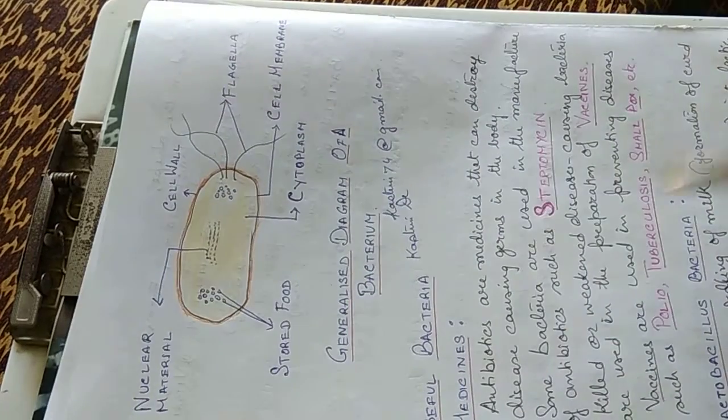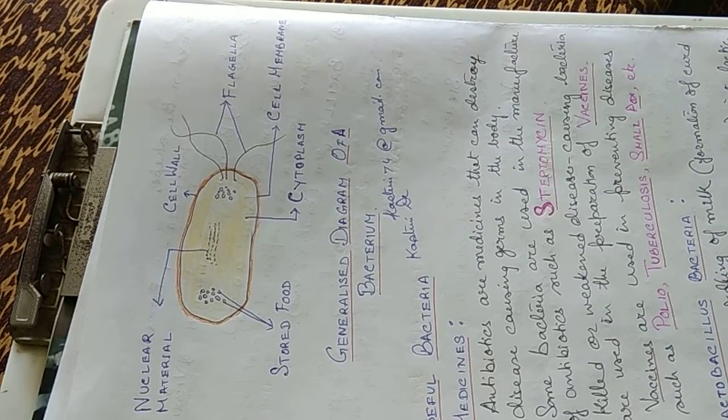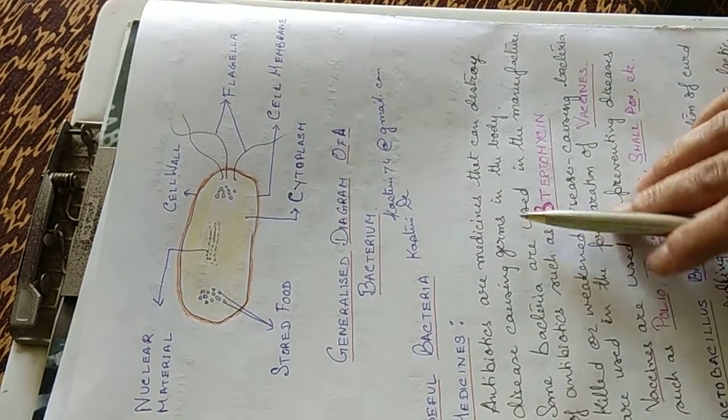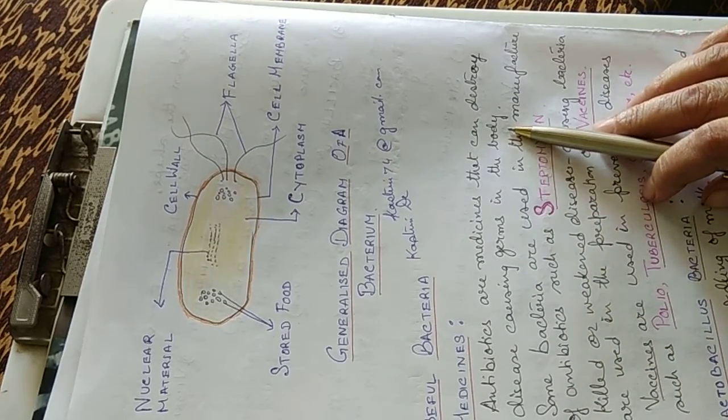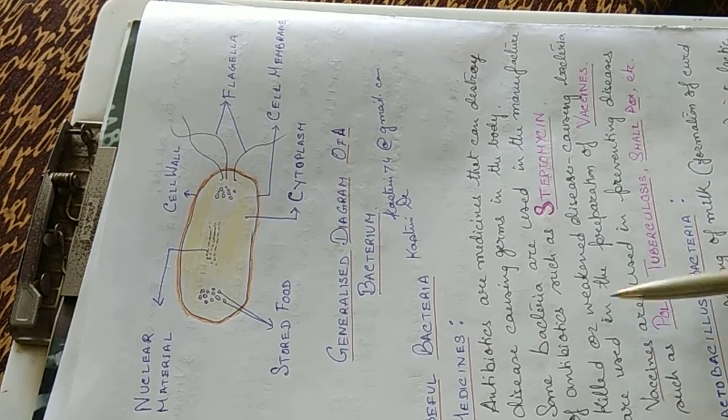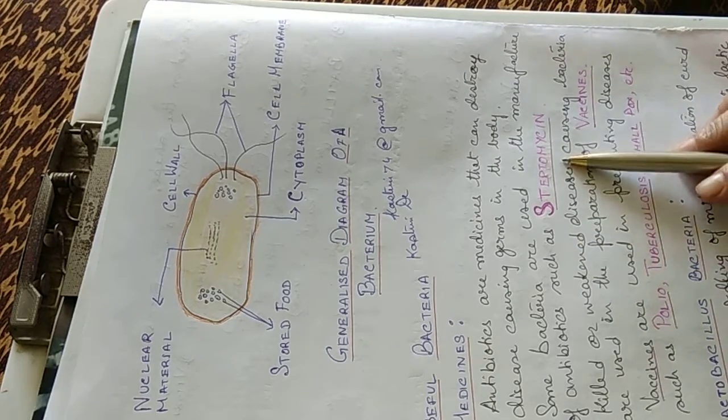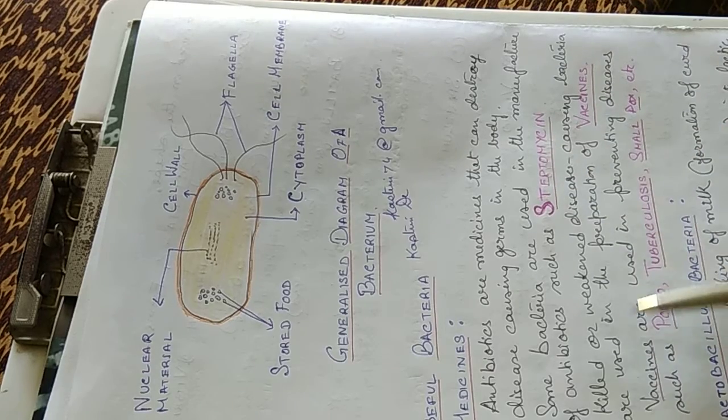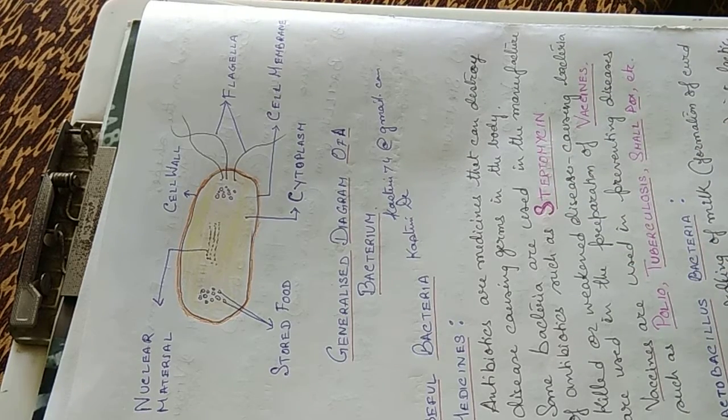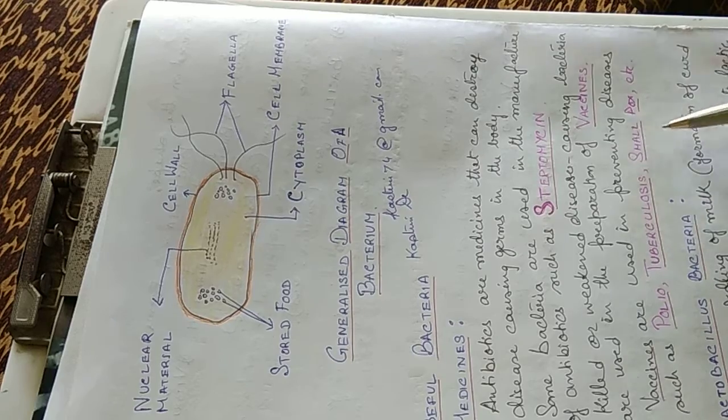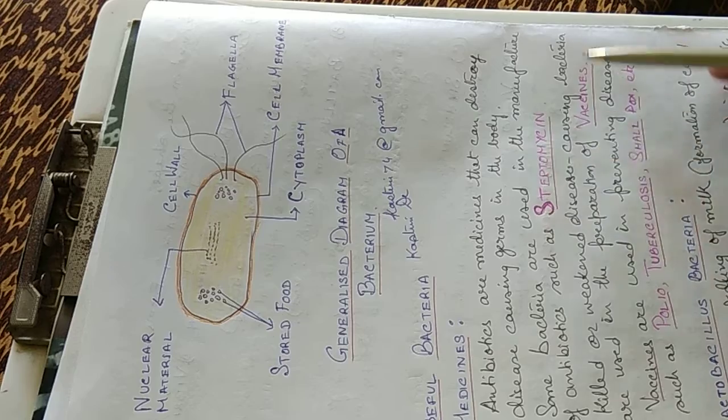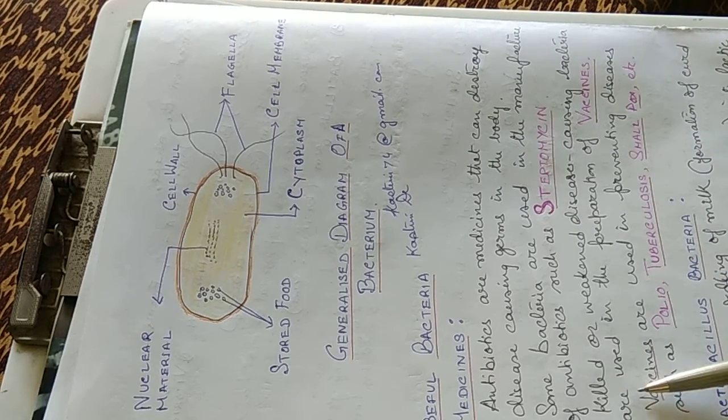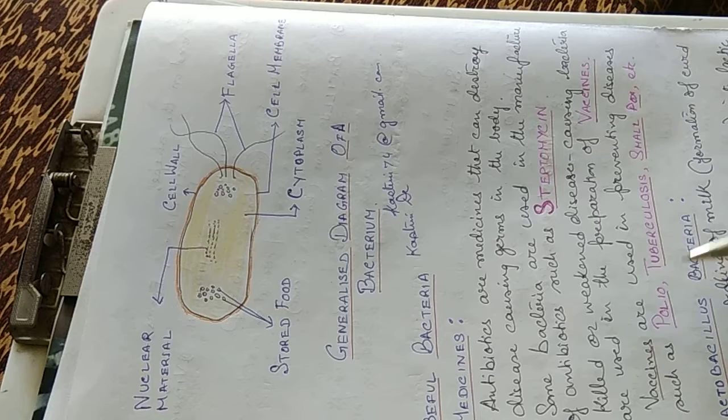The useful bacteria are used as medicines. Antibiotics are medicines that can destroy disease causing germs in the body and bacteria are used in the manufacture of antibiotics such as streptomycin. They are also used as vaccines like polio, tuberculosis, smallpox. These vaccines use killed or weakened disease causing bacteria which are used in the preparation of vaccines. They are used in preventing diseases.